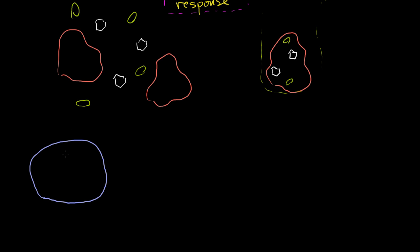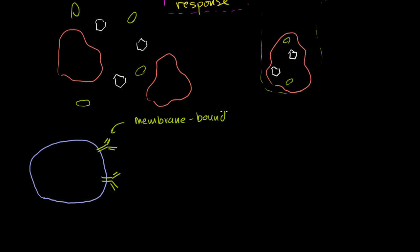B cells have all of these proteins on their surface — actually close to 10,000 of them. These are actually protein complexes with four separate proteins. We can call these proteins membrane-bound antibodies.